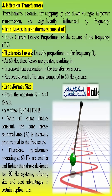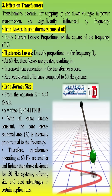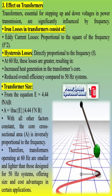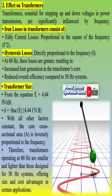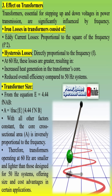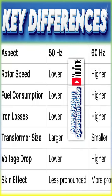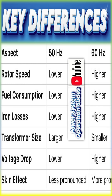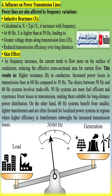The frequency of electrical power is determined by the rotational speed of the generator's rotor. 60 Hz requires a higher rotational speed compared to 50 Hz. This increased speed demands greater mechanical input power, which leads to higher fuel consumption and increased operational costs for power plants. Conversely, 50 Hz systems require less mechanical power, making them more fuel-efficient and cost-effective in the long run.